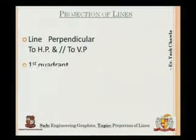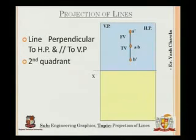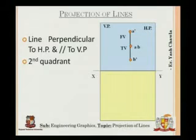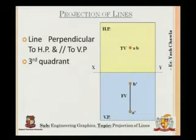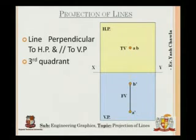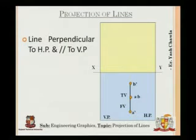Looking at the slide: in the first quadrant, this is your final answer. For the second quadrant, A-dash B-dash is the front view and AB is the top view — both lie above XY. For the third quadrant, the top view point AB is shown above and the front view A-dash B-dash is below XY. The next condition is: line is perpendicular to HP and parallel to VP.